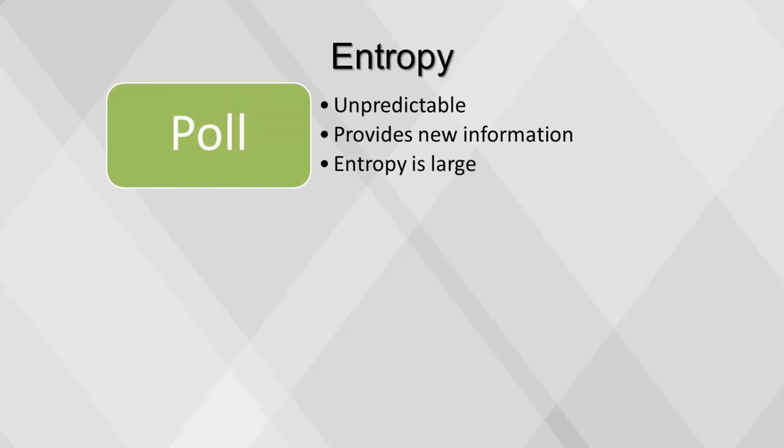To get an informal, intuitive understanding of the connection between these terms, consider the example of a poll on some political issue. The outcome of the poll is relatively unpredictable, and actually performing the poll and learning the results gives some new information. These are just different ways of saying that the entropy of the poll's results is large.